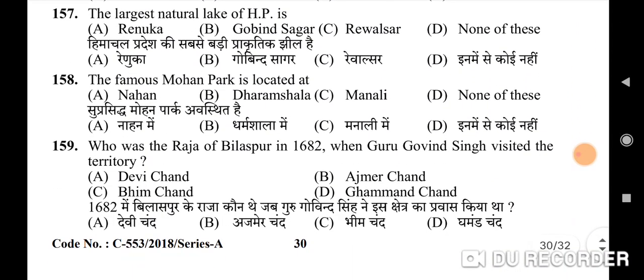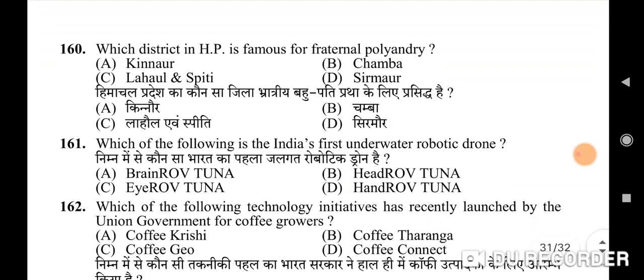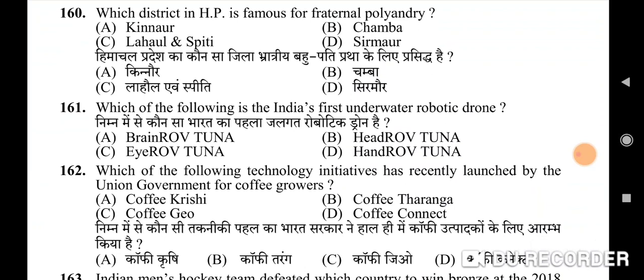157th question: the largest natural lake of Himachal Pradesh — correct option is A: Renuka. 158th question: the famous Mohan Park is located — correct option is D: none of these. 159th question: who was the Raja of Bilaspur in 1682 when Guru Gobind Singh visited the territory — correct option is C: Bhimchand. 160th question: which district in Himachal Pradesh is famous for fraternal polyandry — correct option is A: Kinnaur.